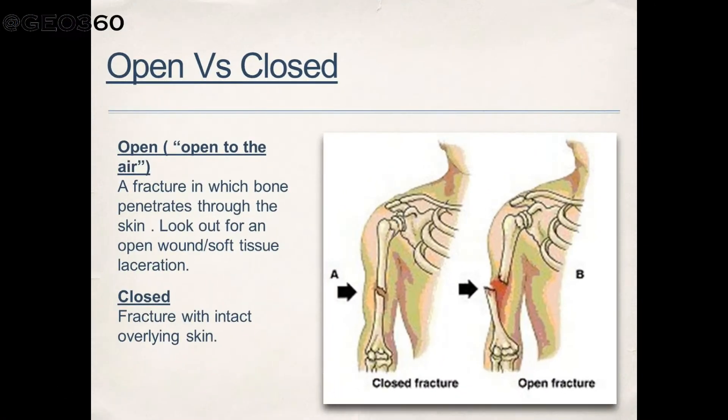In closed fractures, the skin above the fracture is intact. Although the bone ends may have damaged nearby tissues and blood vessels, the skin above remains intact.